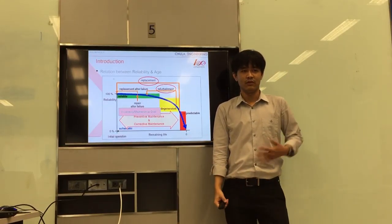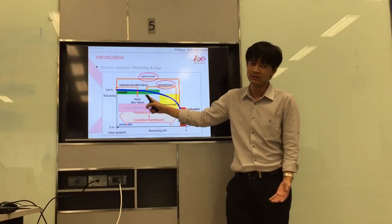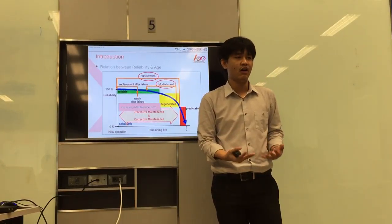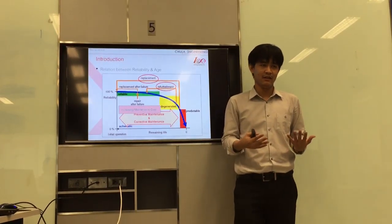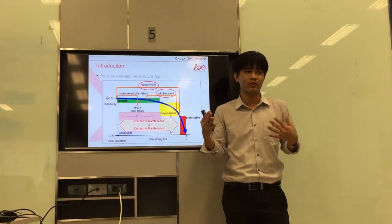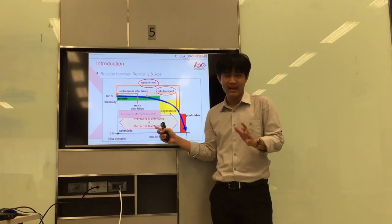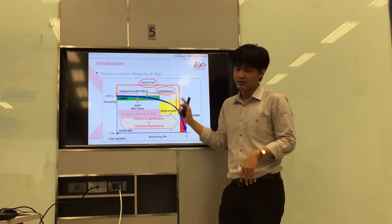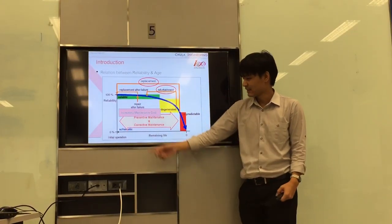So what must the organization do? To keep the reliability in the reliable zone, they must do maintenance, such as preventive maintenance or corrective maintenance. Preventive maintenance means activities that you do periodically to prevent failures from occurring. Corrective maintenance is the repair carried out after a failure has happened. As time passes, the maintenance costs are increasing.